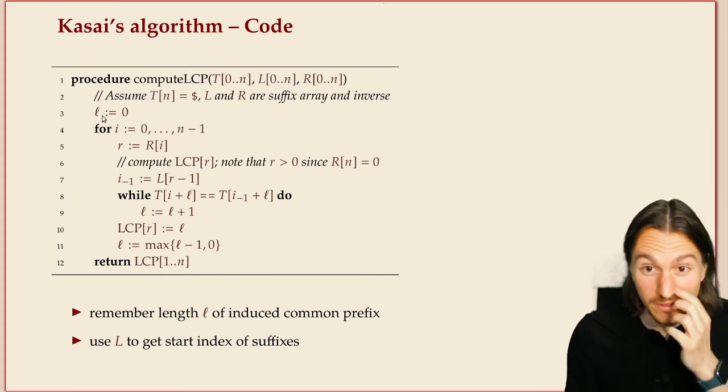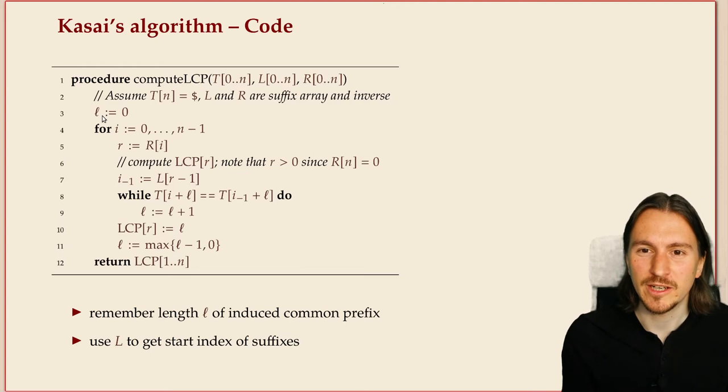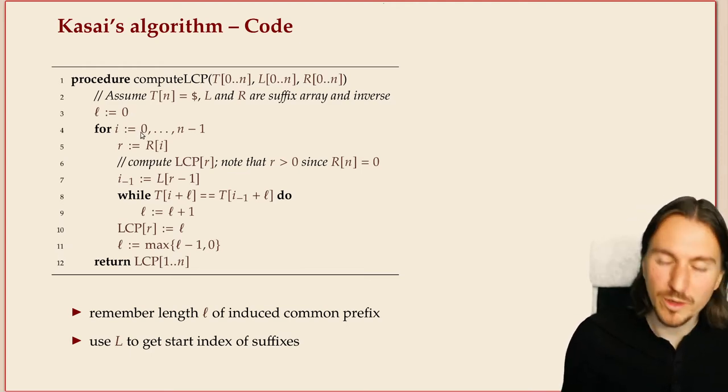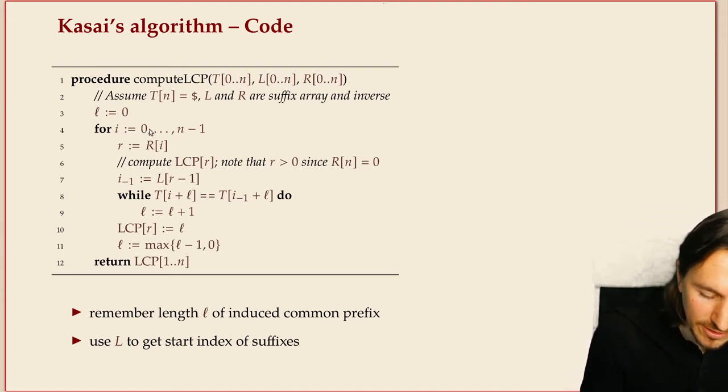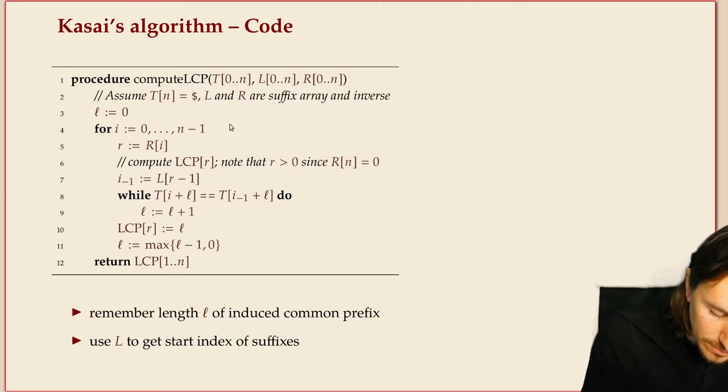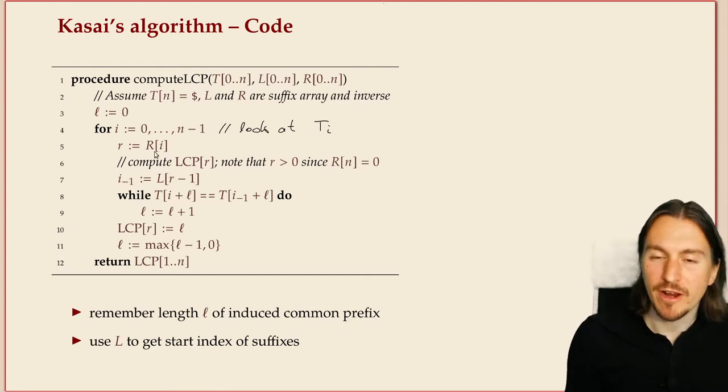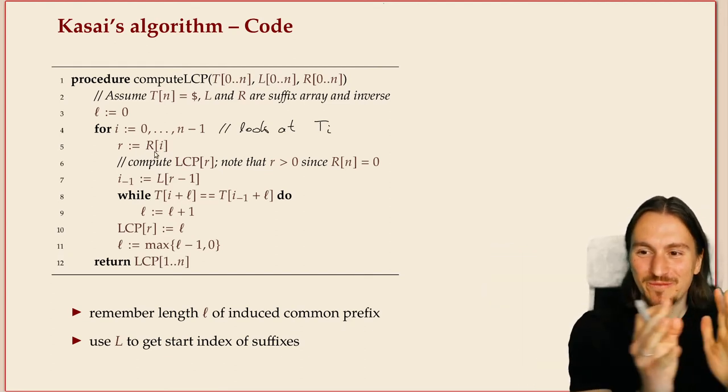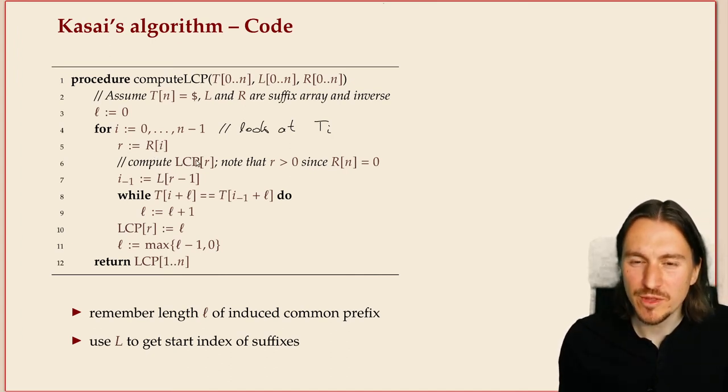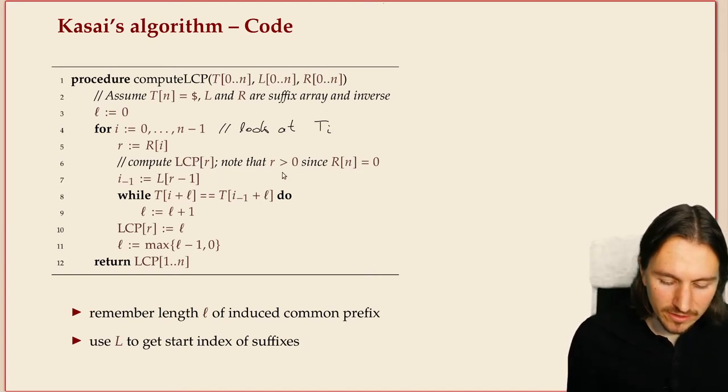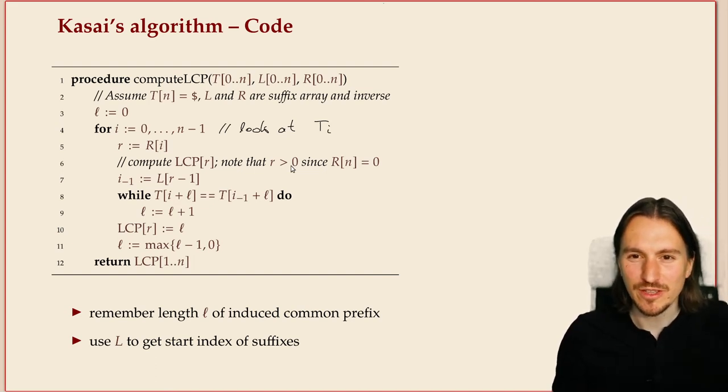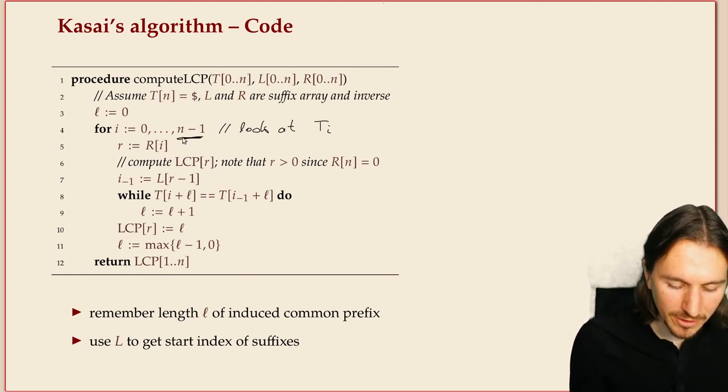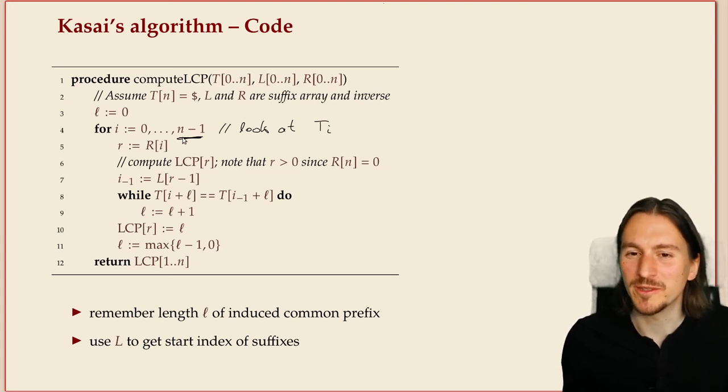But just how does it work? L stores the current length of the common prefix that we found. Initially that's zero. Then we start with the first position in the text. We find, so we start, we look at the suffix starting at position I. We find its rank in the sorted list. That's moving from the left to the right. That's R. So what we will do is we compute the entry LCP of R. And we'll note that this R can never be zero. That would mean we've reached the end of the text, just the dollar. And we stop here at N minus one. We never let it reach the last because there's no LCP entry for that to compute anyways.